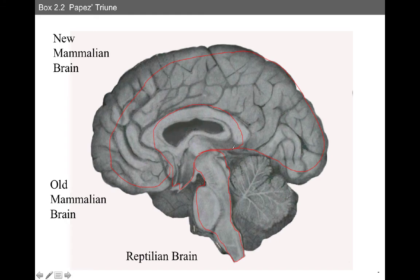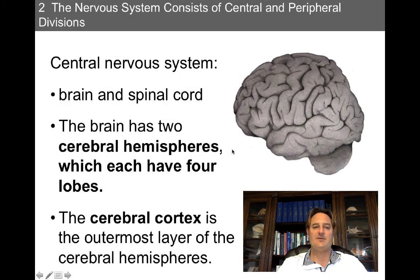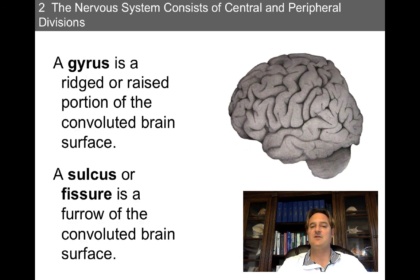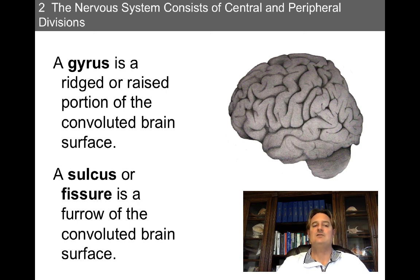The idea of Pape's Triune is that our mammalian brain is on top of the reptilian brain, and we have the neomammalian brain on top of the old mammalian brain. The brain has two cerebral hemispheres, each with four lobes. The cerebral cortex is the outermost layer. A gyrus is a ridged or raised portion of the convoluted brain surface, while a sulcus or fissure is a furrow — technically a fissure is deeper than a sulcus, but for this course we can think of them as indentations, whereas gyri are the raised ridges.